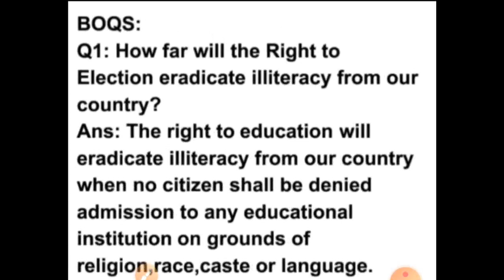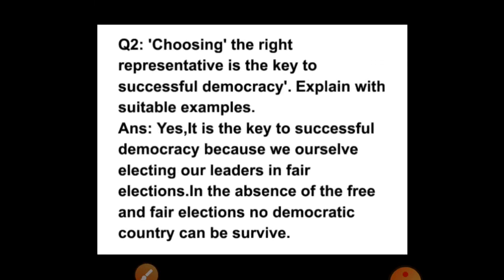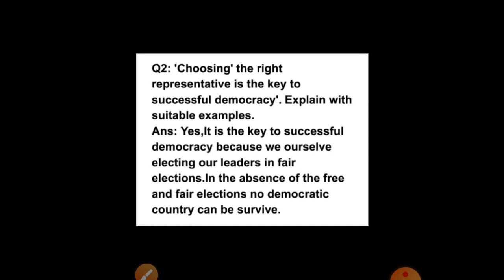Now BOQs of this chapter. First: how far will the right to education eradicate illiteracy from our country? The right to education will eradicate illiteracy from our country when no citizen shall be denied admission to any educational institution on grounds of religion, race, caste or language. Second: choosing the right representative is the key to successful democracy — explain with suitable examples. It is the key to successful democracy because we are ourselves electing our leaders in fair elections. In the absence of free and fair elections, no democratic country can survive. These are the answers of lesson number 8.